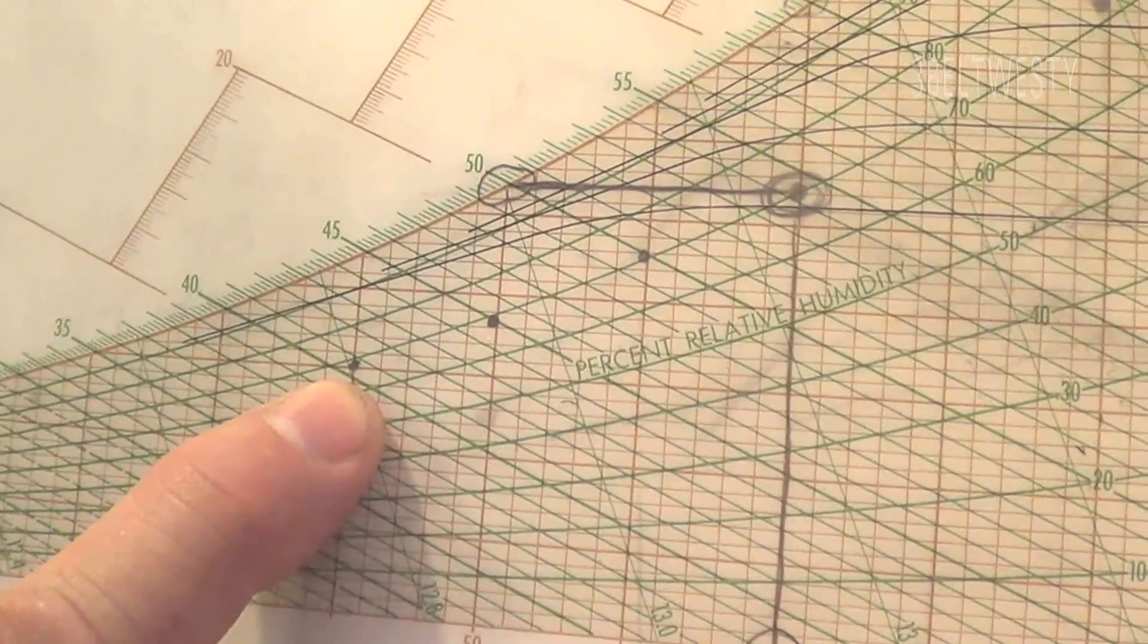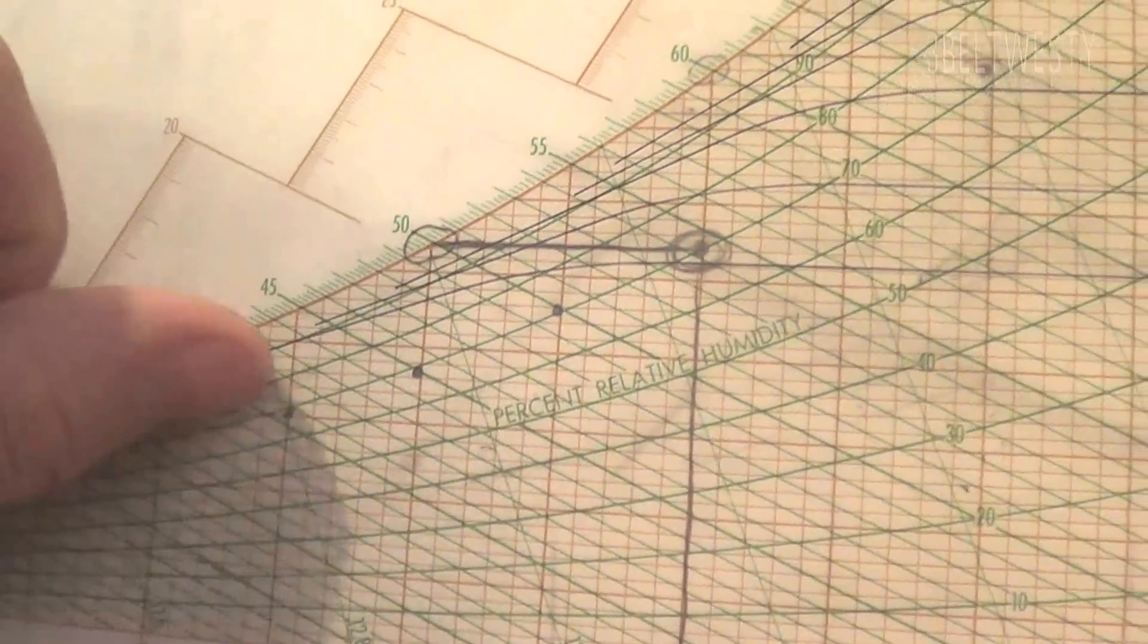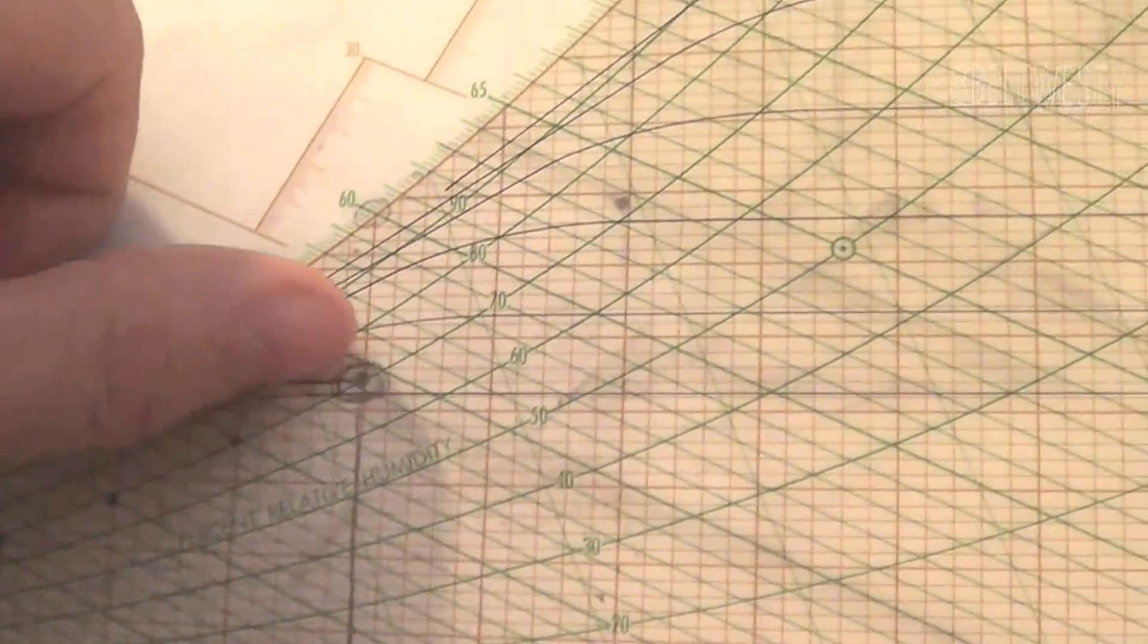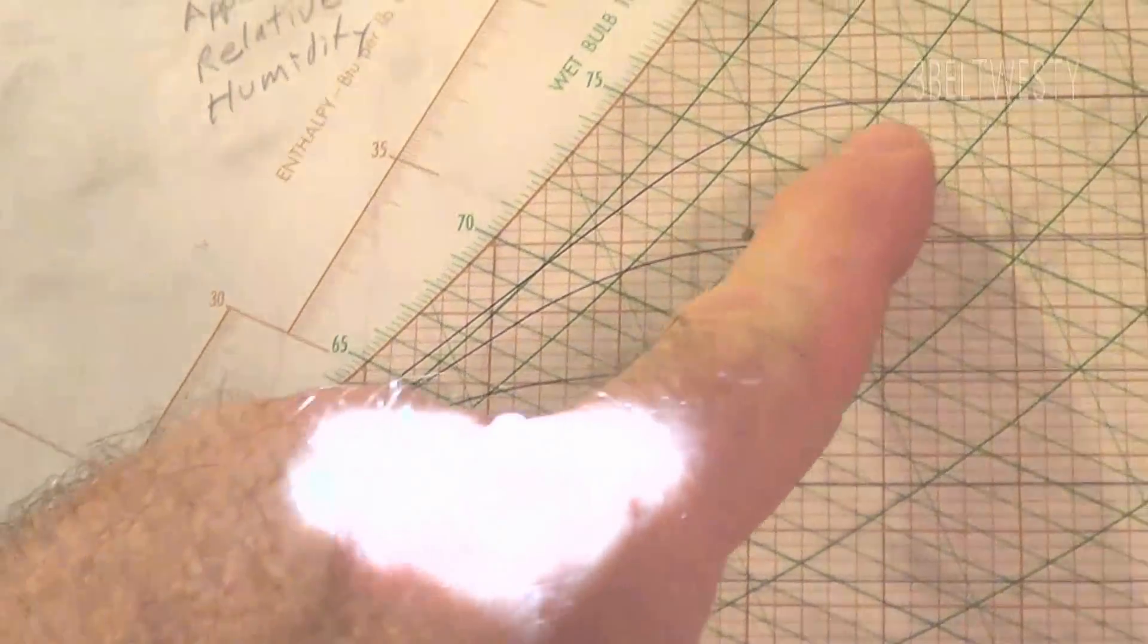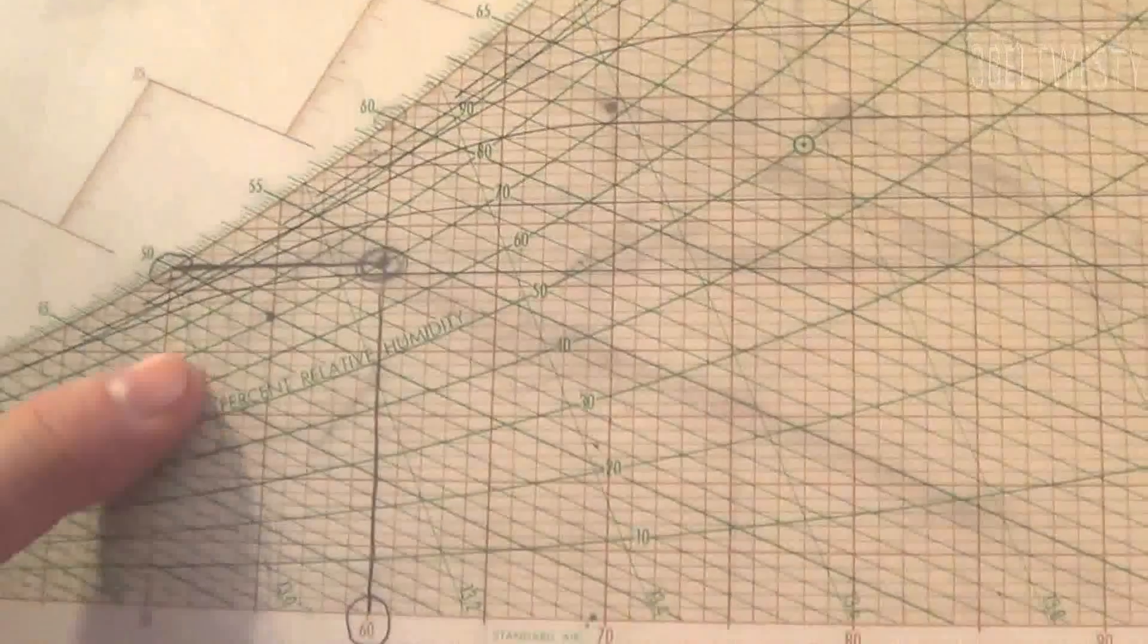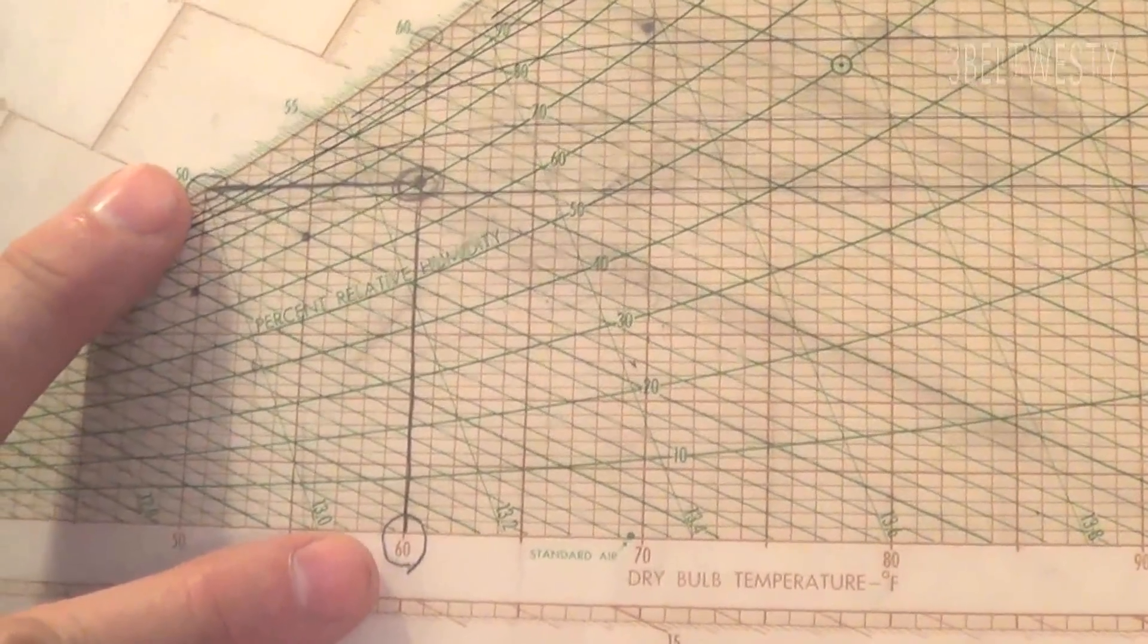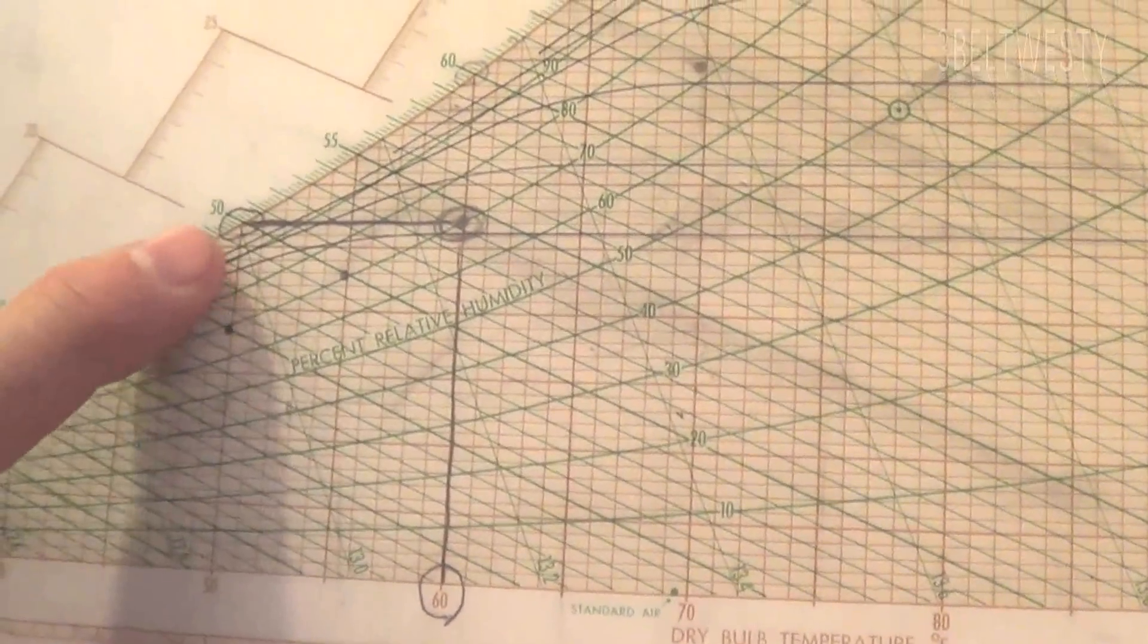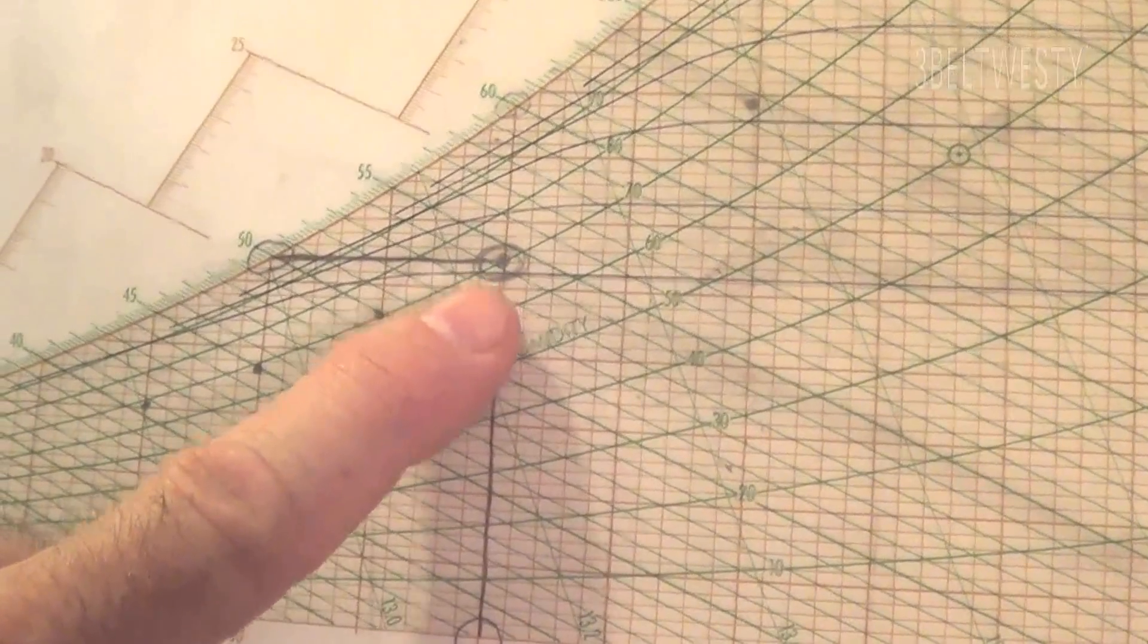So this line here of 70% relative humidity is roughly a good swag—it's a 10 degree differential between the dry bulb and the dew point.